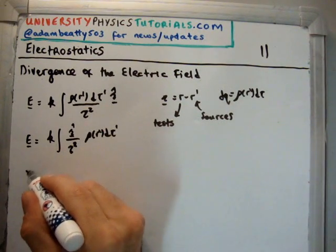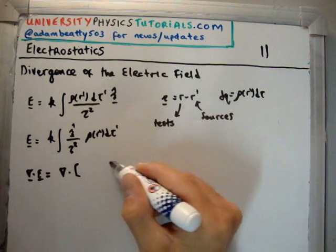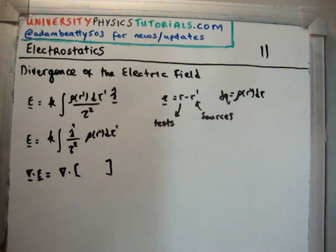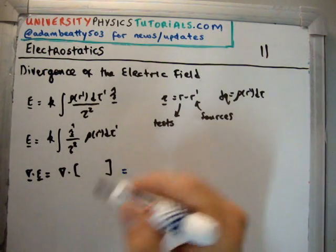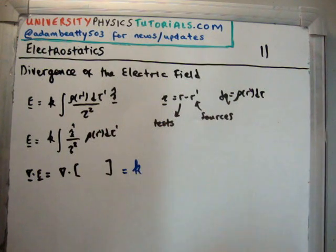So if we take the divergence of this, we're going to get the divergence of all of that above. Now, the interesting point here is that we can actually move the divergence or nabla operator inside, because you can differentiate and integrate at different times.